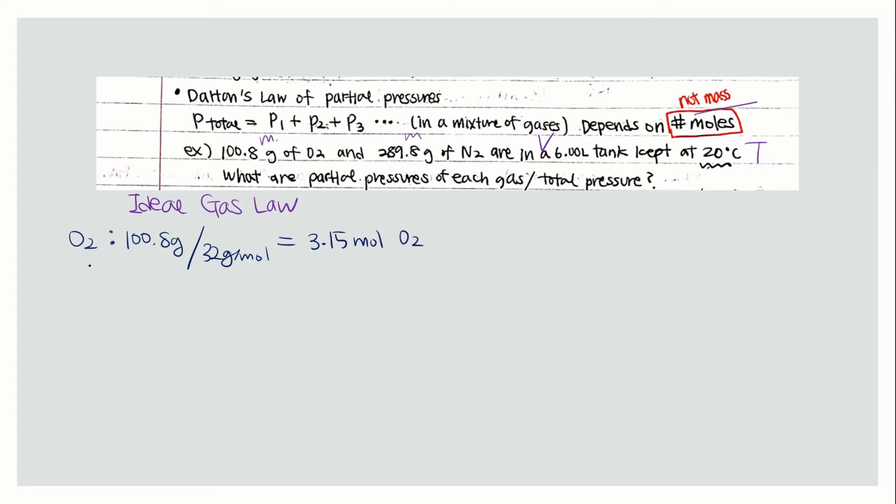Now use the ideal gas law. To find the pressure you do nRT over V, which equals 3.15 moles times R. We are calculating for the pressure in atm, so you use the R value for atm.